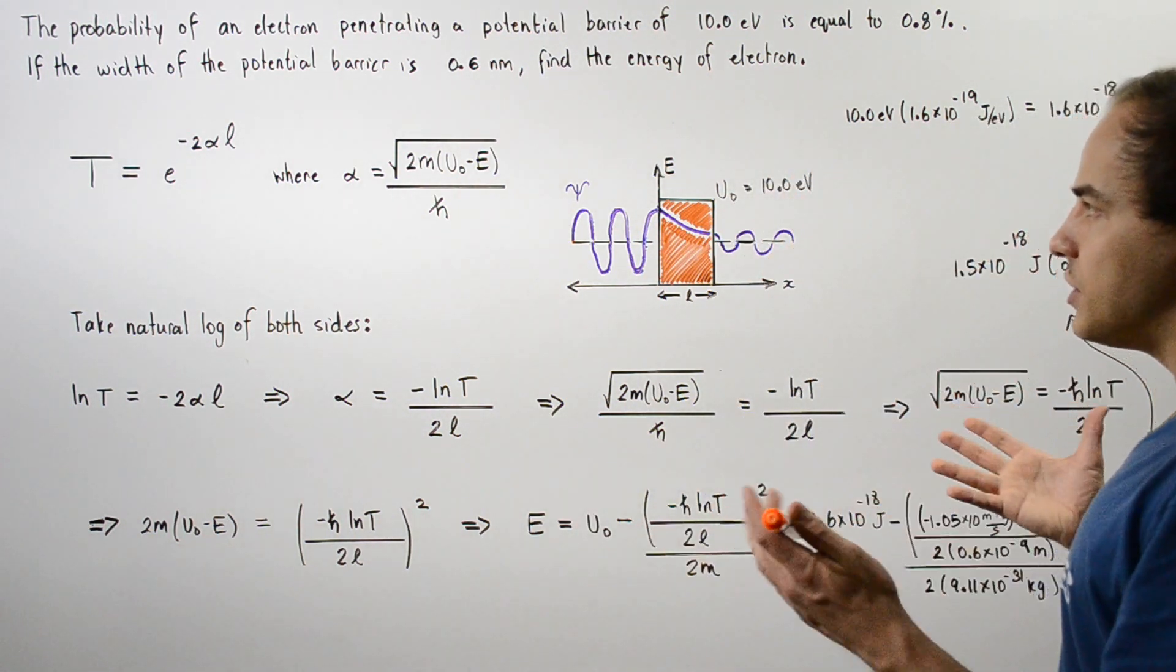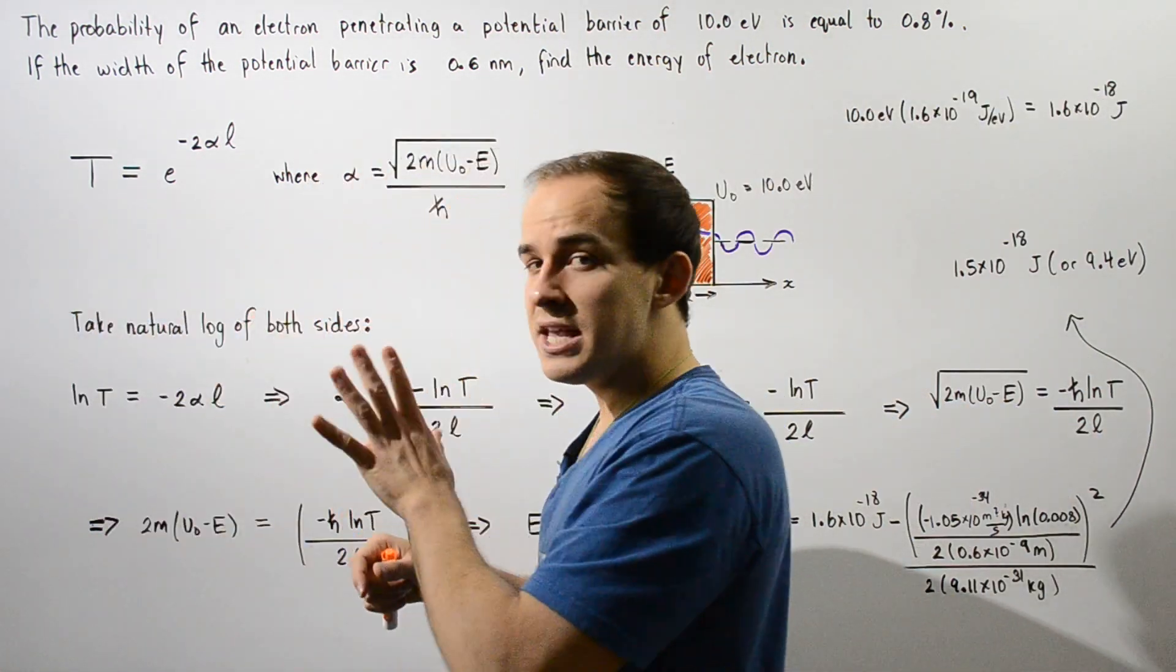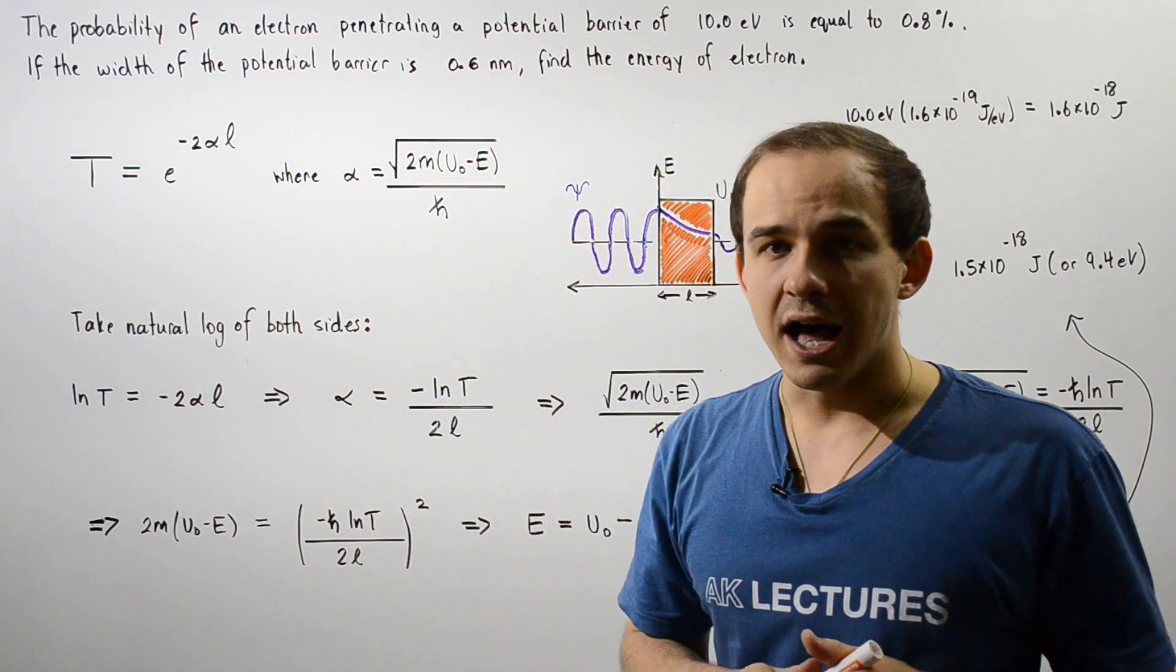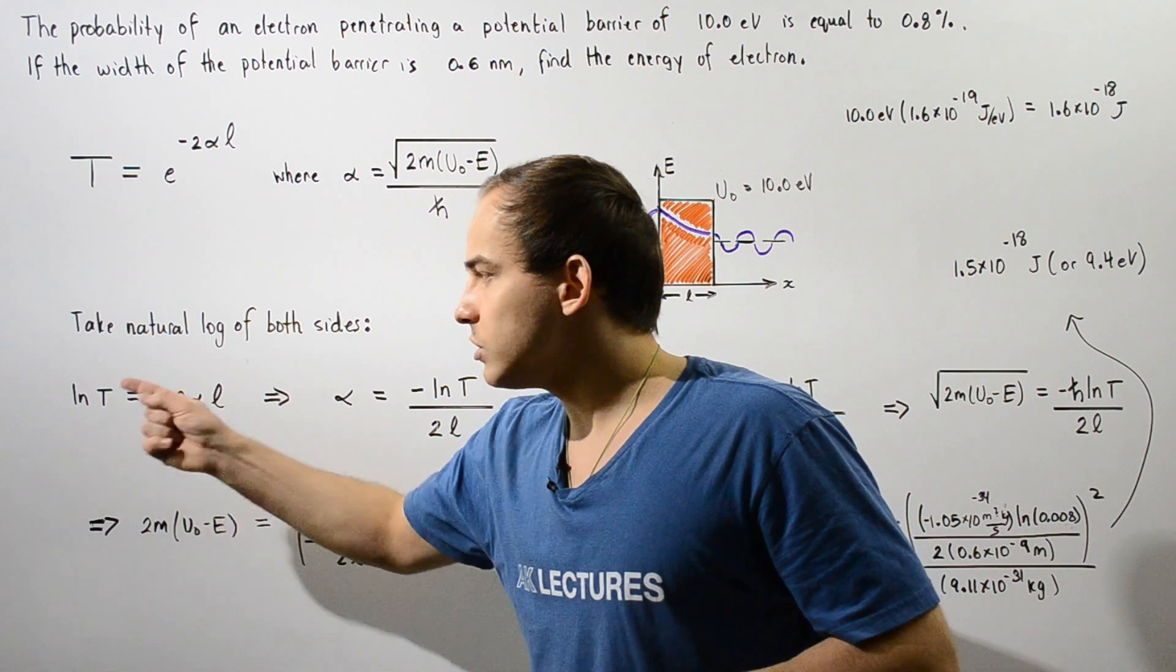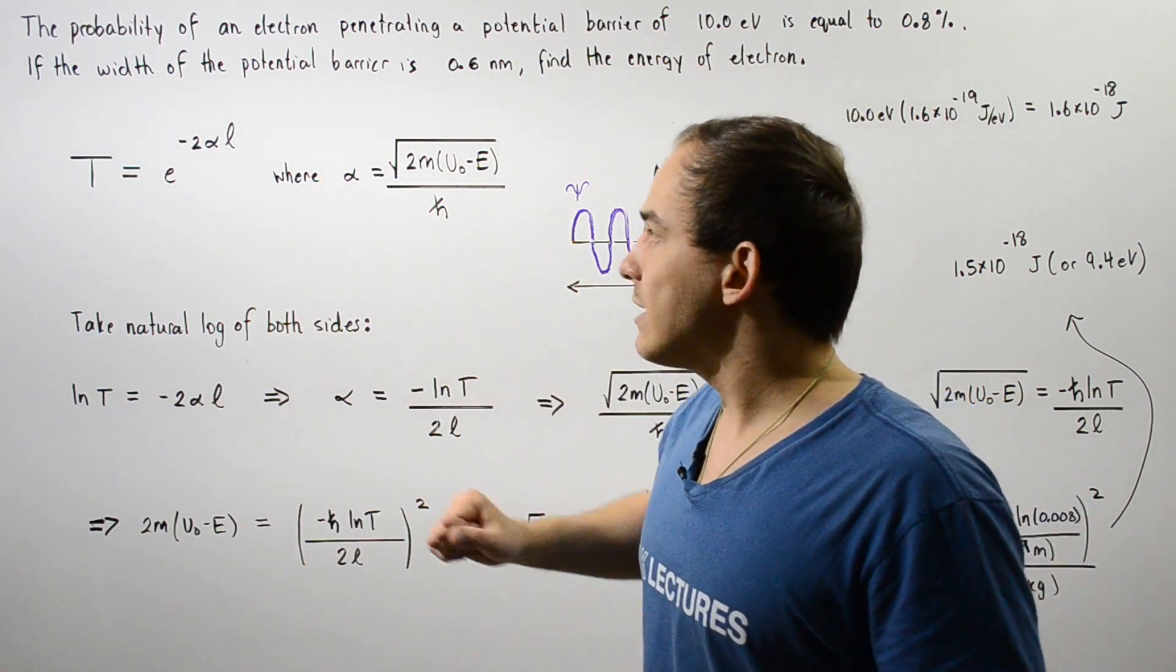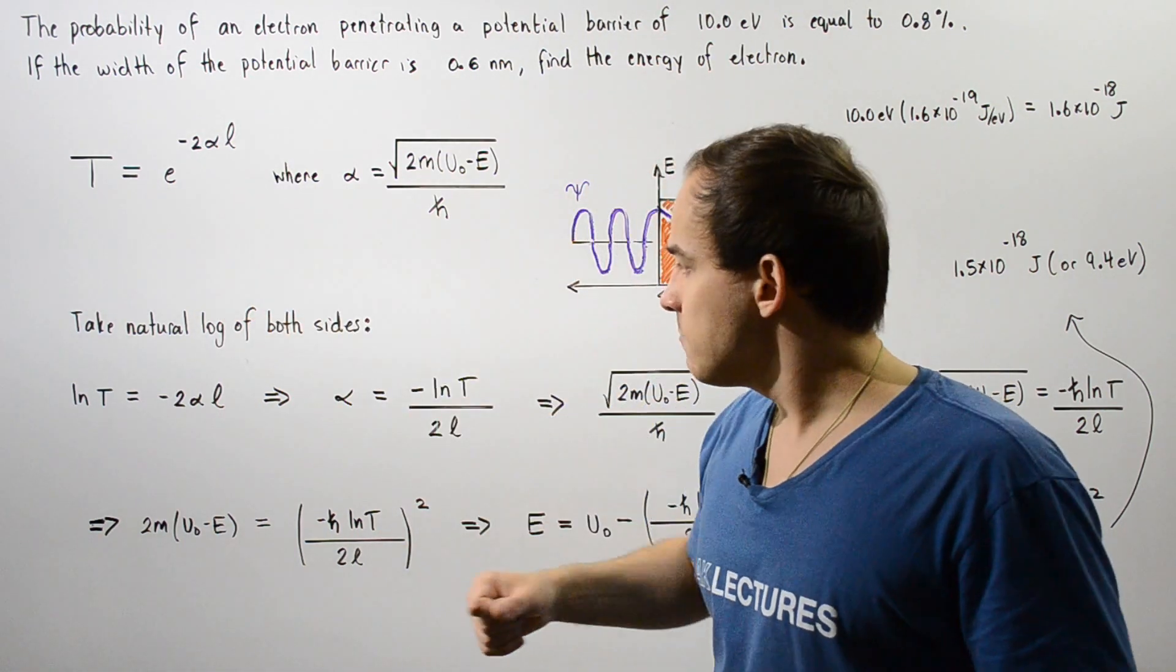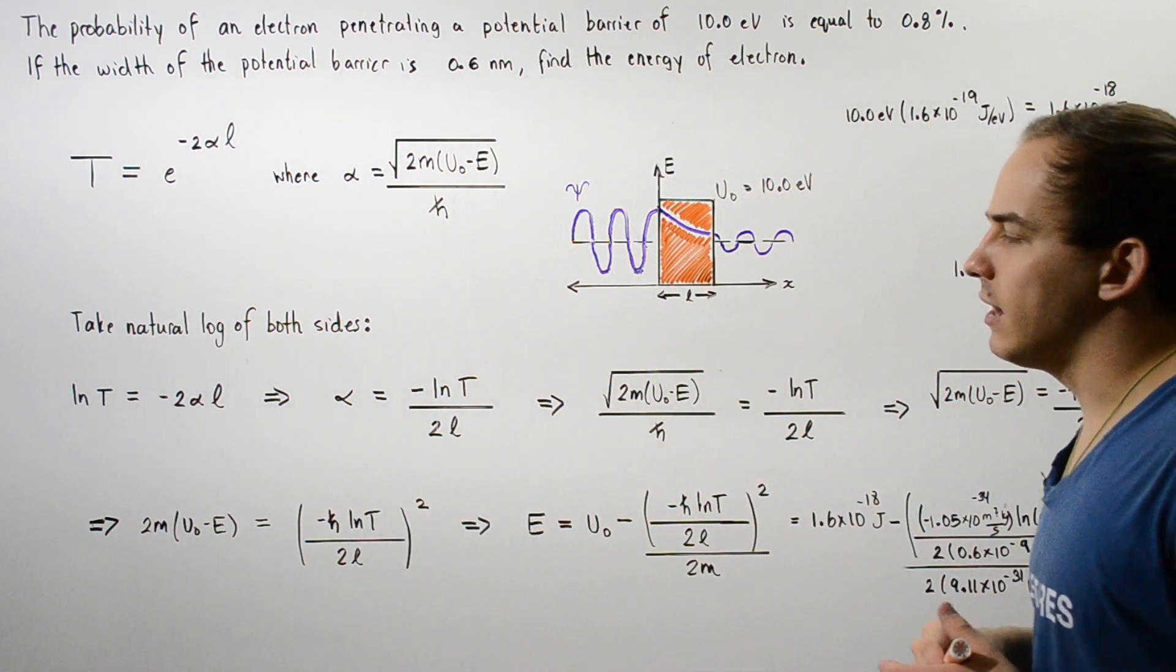Using all this information, let's begin with this equation and let's take the natural log of the left and the right side. The natural log of the left side is simply ln of T. And if we take the natural log of our exponent e, that will disappear and we're left with negative 2 multiplied by alpha multiplied by L.